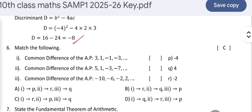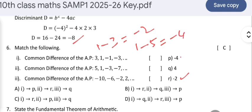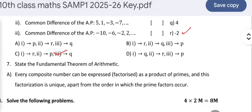The common difference of the AP 3, 1, −1, −3: taking 1 − 3 = −2, this is the common difference, which is R. For the second AP, the common difference is 1 − 5 = −4, which is P. So pairing 1 to R and 2 to P, the answer is C.